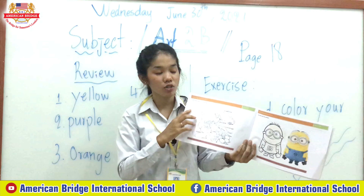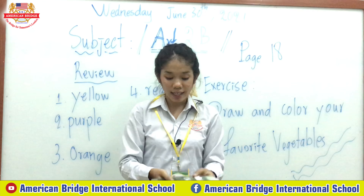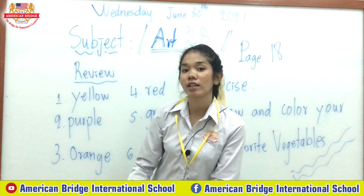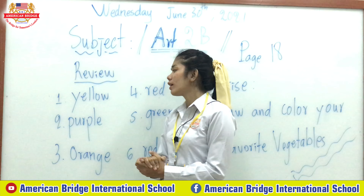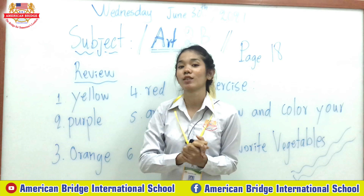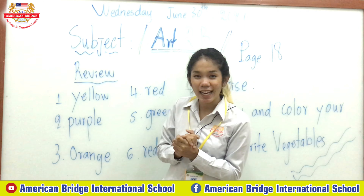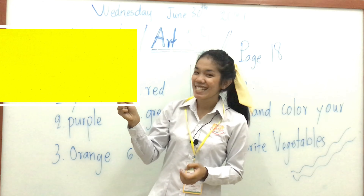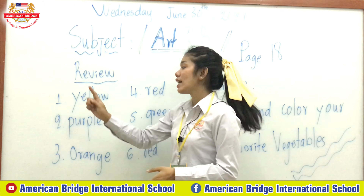You have to color the vegetables here. Now the teacher wants to review some colors that you have to choose to color the picture. Look at the whiteboard. The first color — what color is it? Yes, this one is yellow! Spell yellow everyone: Y-E-L-L-O-W. Yellow!